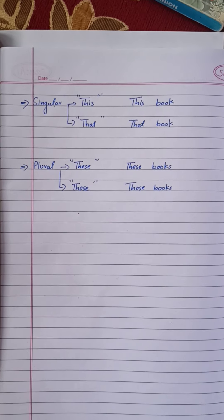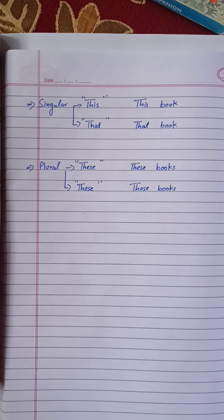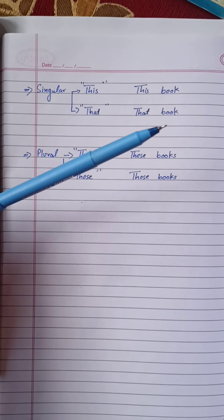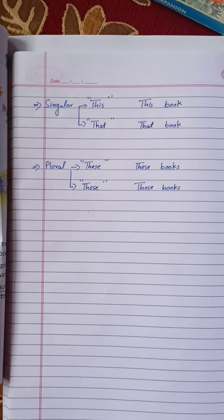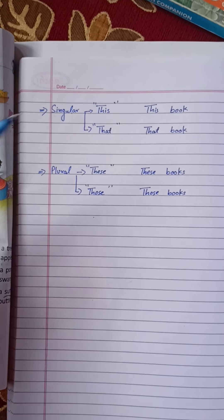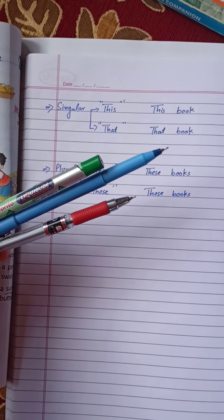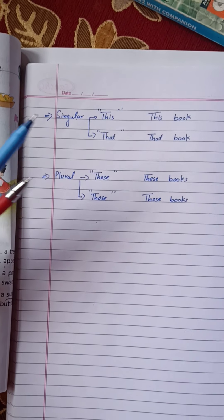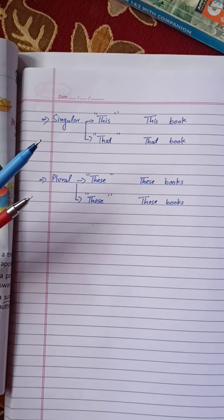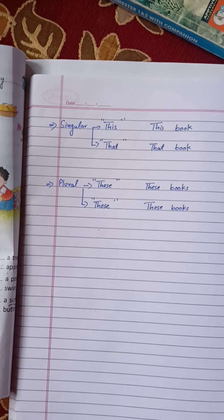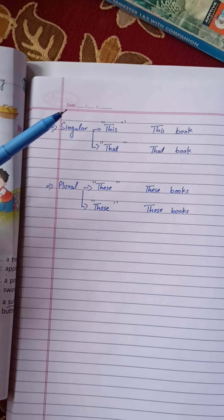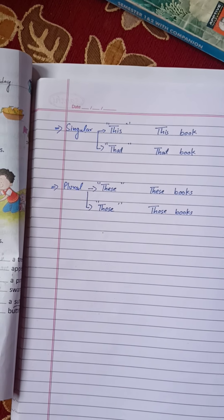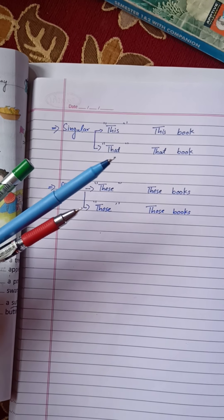What is singular? Singular means one — for example, one pen. What is plural? Plural means more than one. If it is singular, we show one pen. If it is more than one, that is plural.